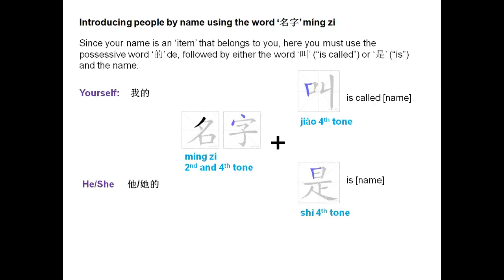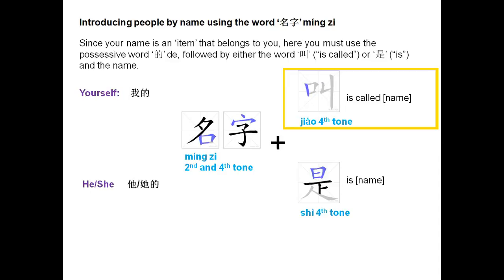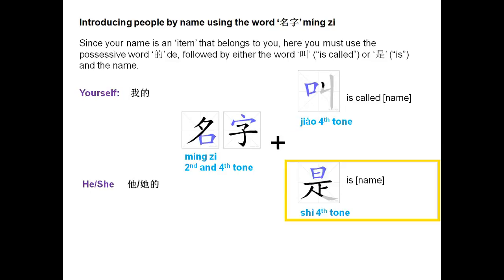Since 名字 means name and your name is an item that belongs to you, you must use the possessive word 的, followed by either the word 叫, meaning is called, or 是, which means is, and then the name.